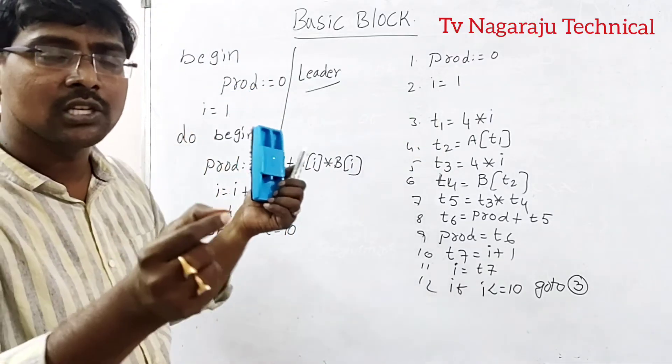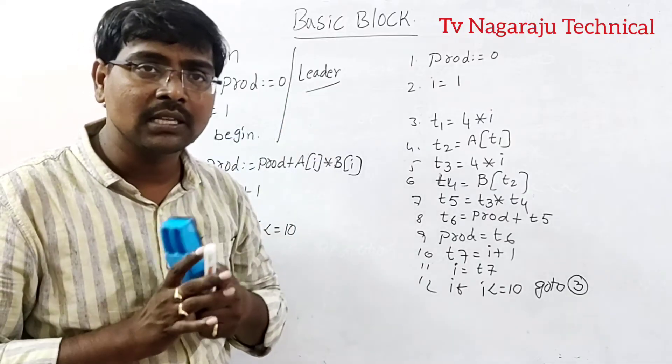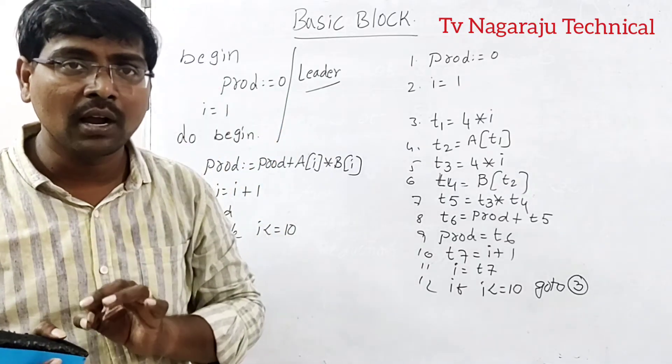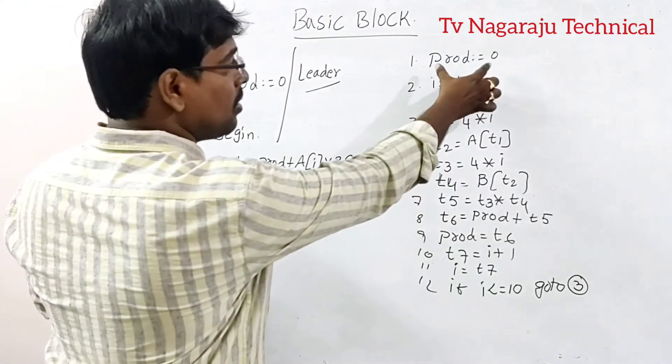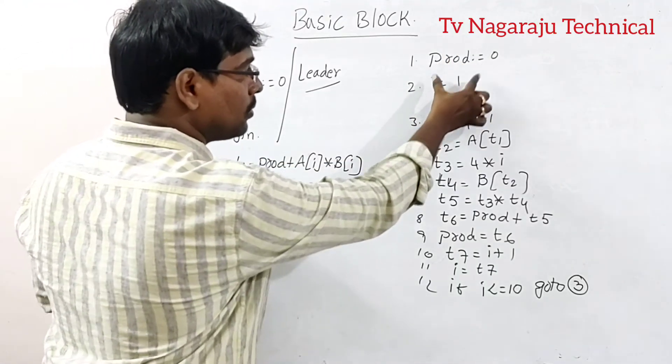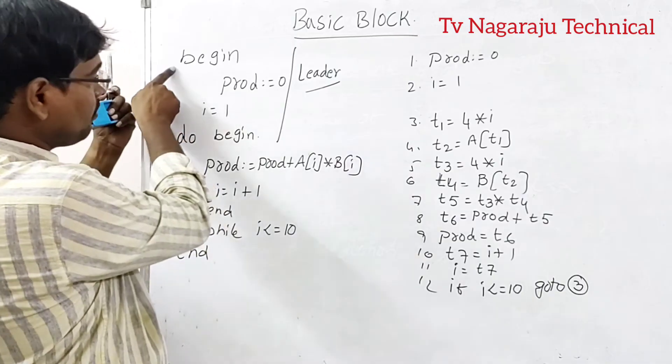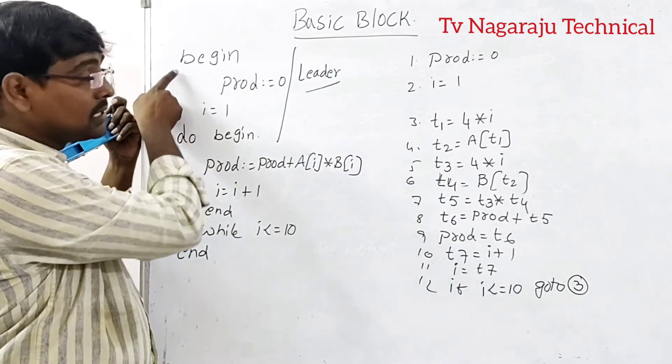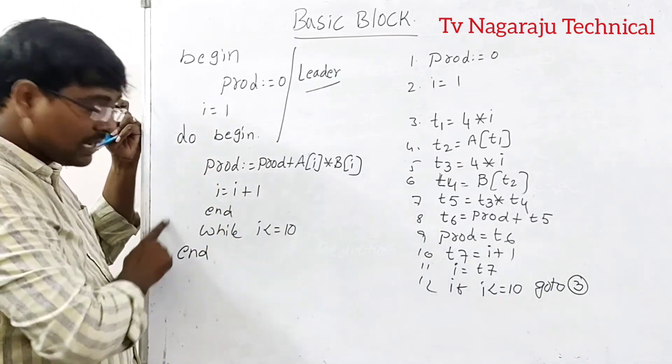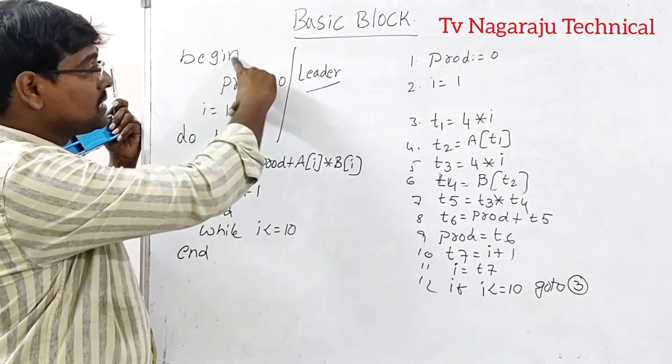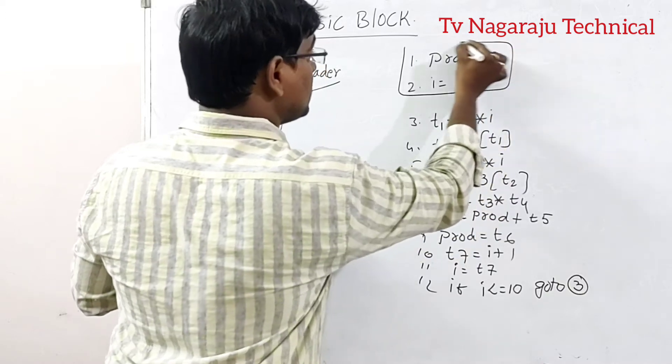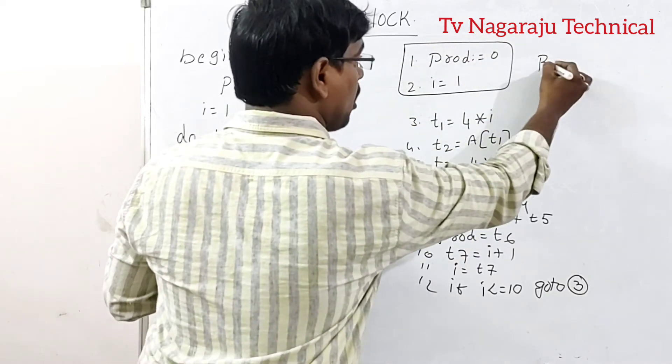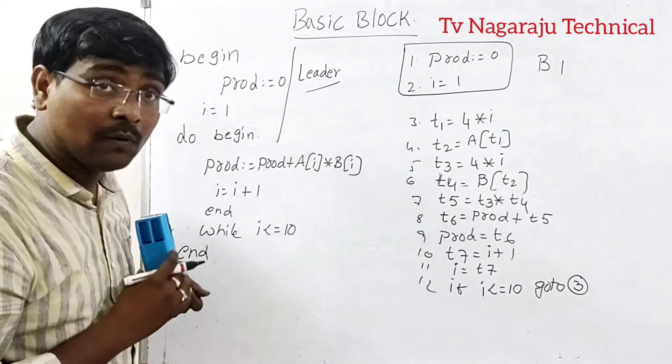And if any conditional statement, go to statement is occurred, that is also called as a leader. Simple thing. Understand carefully. Product is equal to 0, this is the starting, observe the beginning point. This is the beginning point. This is another beginning point. Yes or no? So this is called one block. This is called one block. Assume block B1.